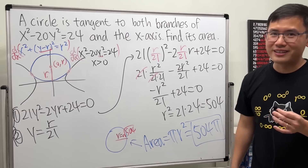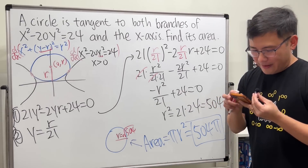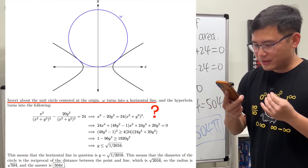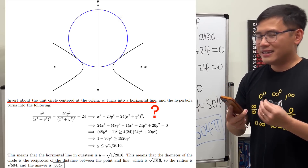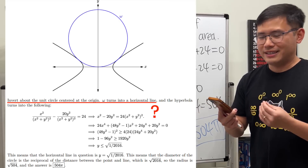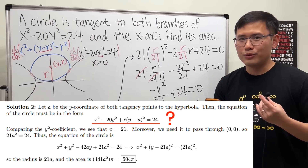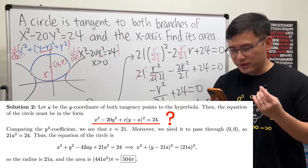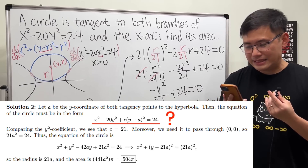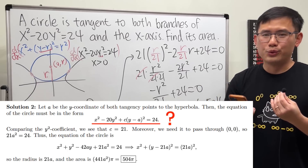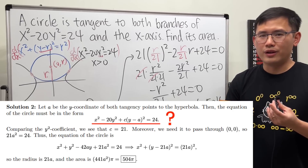Looking at the official solutions, the first one mentions something about a unit circle centered at the origin where omega turns into a horizontal line — I really have no idea how they derived that. Solution 2 let 'a' be the y-coordinate of the point of tangency and somehow obtained x² − 20y² + c·(y − a)² = 24, but I can't figure out where that c·(y − a)² term comes from.